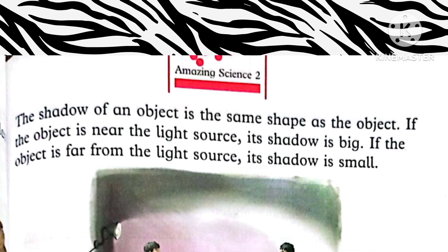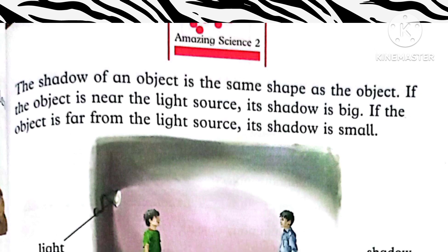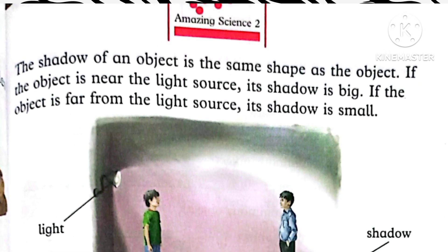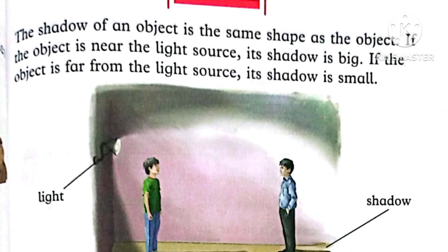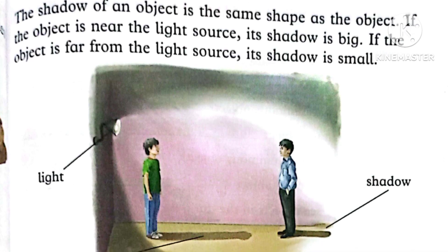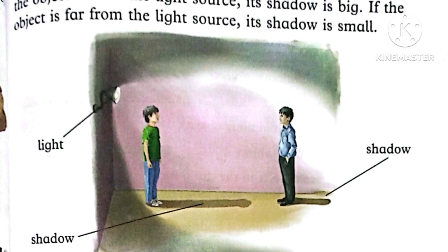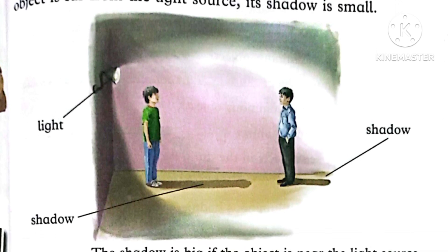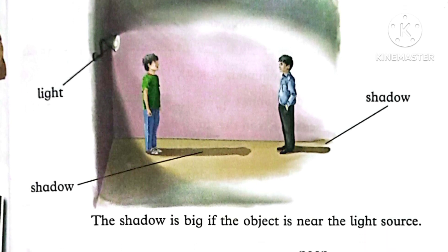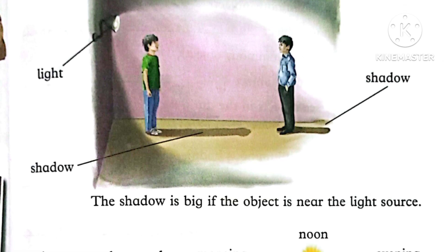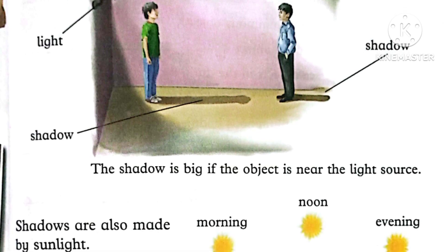The shadow of an object is the same shape as the object. If an object is near the light source, its shadow is big. If an object is far from the light source, its shadow is small. We can see this in the picture — the child standing near the light source has a bigger shadow.